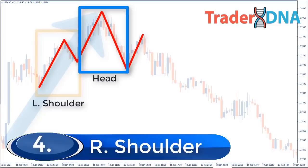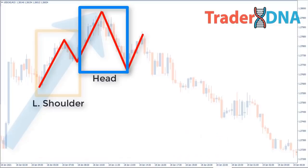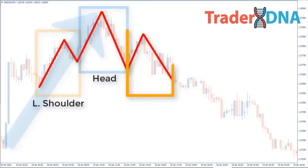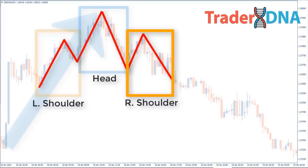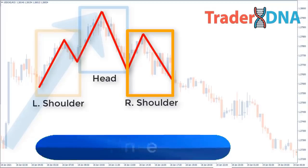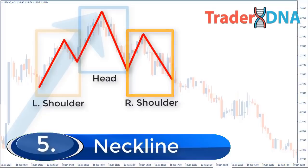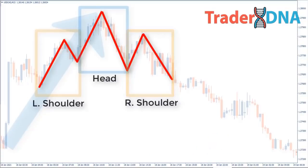The neckline is beginning to take shape but we need the right shoulder before we can draw it on our chart. Step four: right shoulder. The right shoulder is where things come together — it's an indication that buyers are tiring and that the market may be gearing up for a reversal. As soon as the right shoulder begins we have enough to start plotting the neckline, but because the pattern isn't yet complete it's best to think of it as a rough draft rather than a final version.